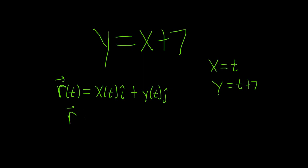So we can write this as r of t equals, well, x of t is simply t, so we have t i-hat. And then y of t, that's just t plus 7. So t plus 7 j-hat. And that's actually it. That's all you have to do.